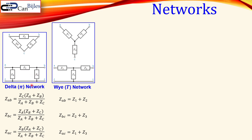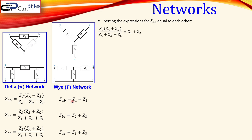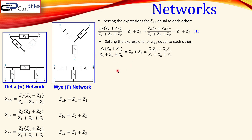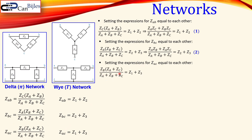Now we need to make a conversion, setting the impedance expressions equal to each other pairwise — these two, these two, and these two — to produce equations converting ZA, ZB, ZC to Z1, Z2, Z3. Setting the expressions for ZAB equal gives equation 1. Setting ZBC expressions equal gives equation 2. Setting the expressions for ZAC equal gives equation 3.